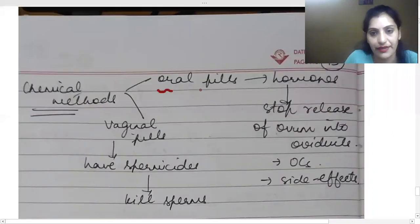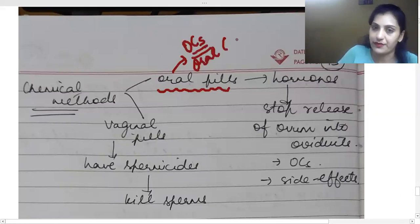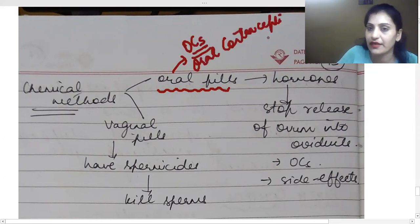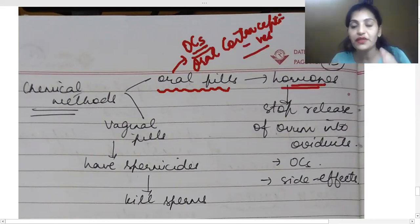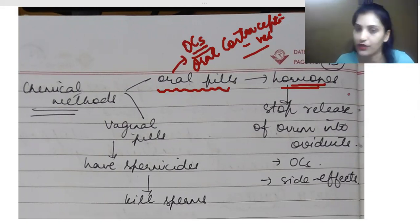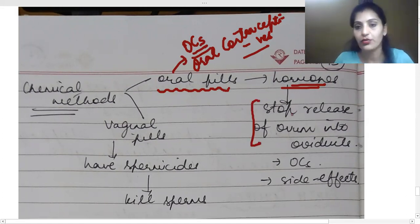They are actually hormones. And what is their work? They will stop the release of ovum into oviducts. Ovum release is stopped. This means ovulation is stopped. Ovulation is happening but you have to reach the oviducts, it is not happening. So what will ovum do? What will fertilize? Because we need to have both the gamete cells.